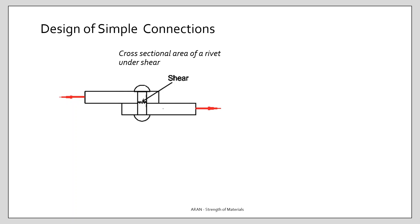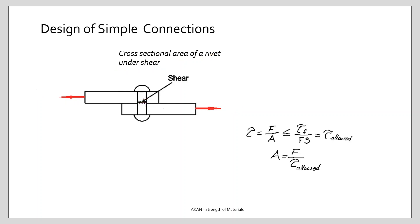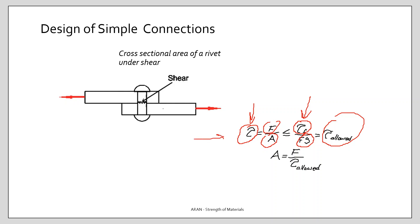For a shear loading example — the cross-sectional area of a rivet: we have a load and a connection containing a rivet, with a surface where shear stresses act. Force divided by area gives the shear stress. This shear stress must not exceed the allowed stress, which is the fail stress of the material divided by the factor of safety. Using this relation we can calculate the minimum area of the rivet.